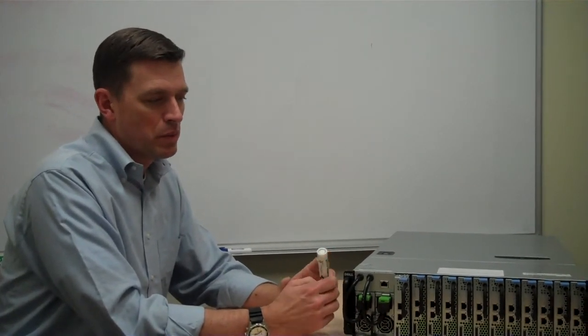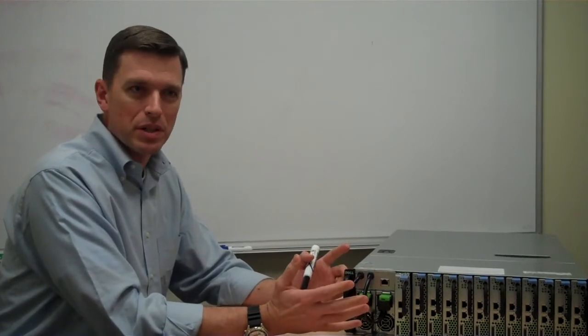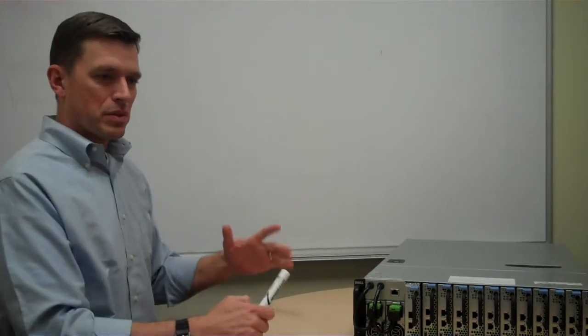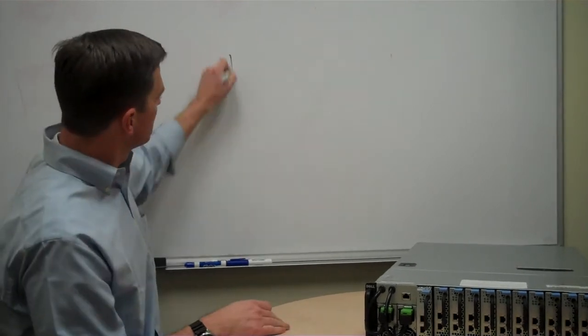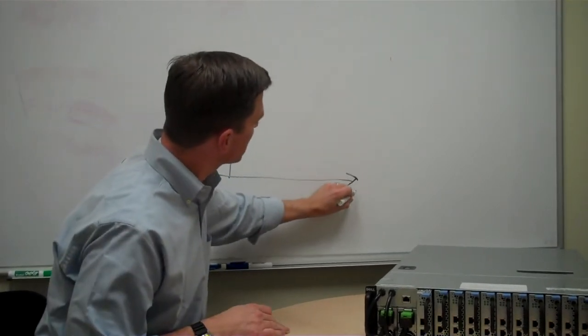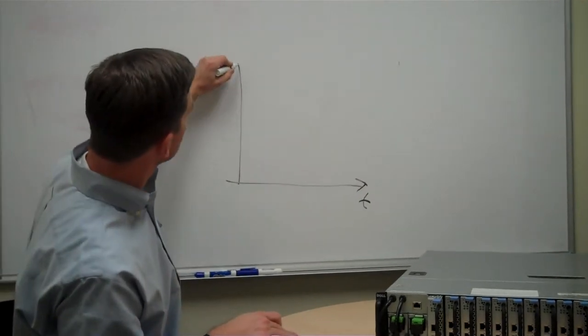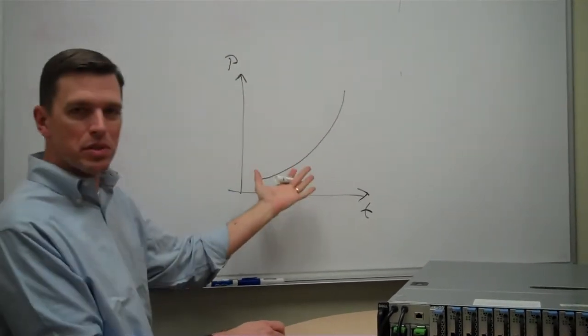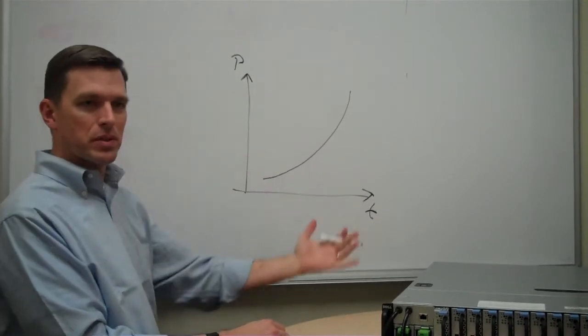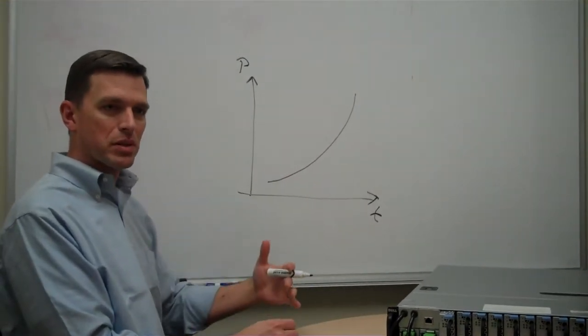And what was readily apparent after those conversations was that there was this growth in performance in servers over time as we followed Moore's law. So if you look at a simple graph like this where you have time on one axis and performance on this axis, as each generation of CPU and chips came out there were these exponential gains taking advantage of all this incremental performance.